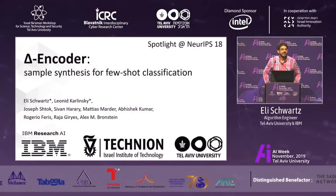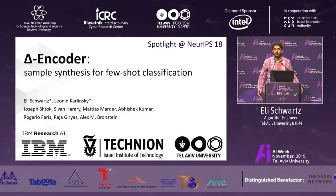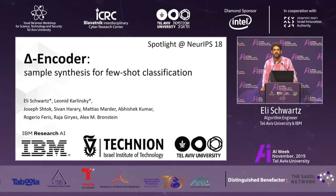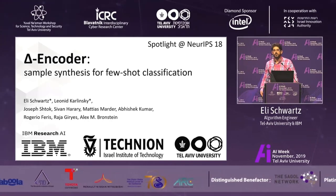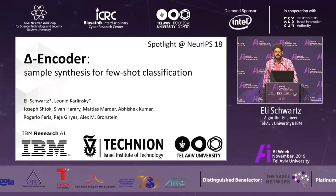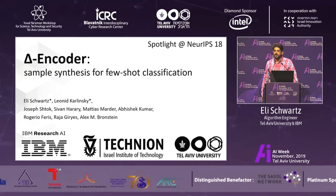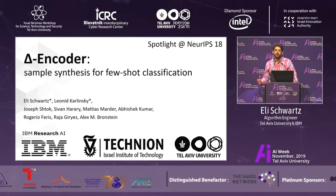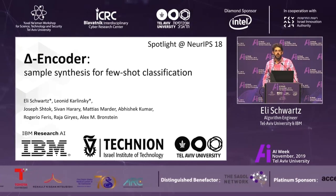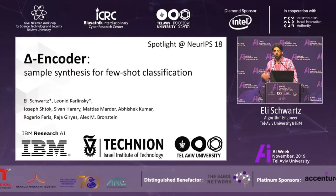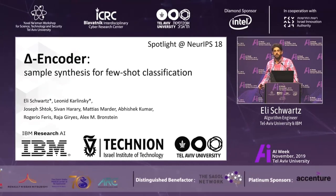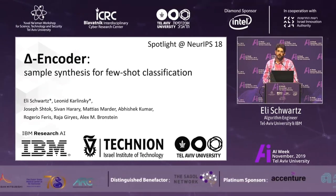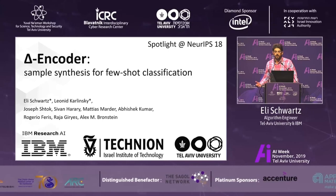Hi, I'm Eli Schwartz, and I'm presenting our paper from NeurIPS last year. Delta Encoder is a sample synthesis method for Few-Shot Object Classification. It's a work done at IBM in collaboration with Tel Aviv University and the Technion.